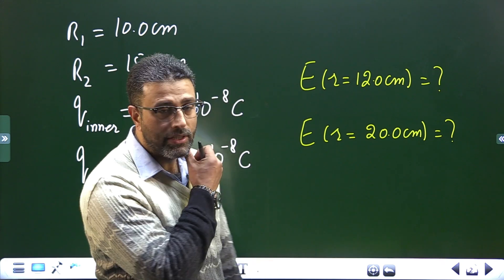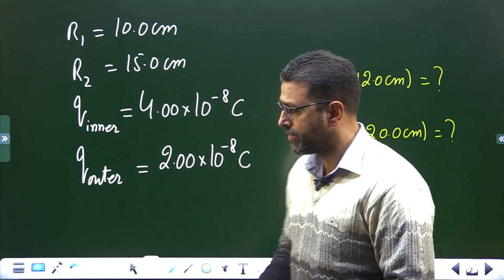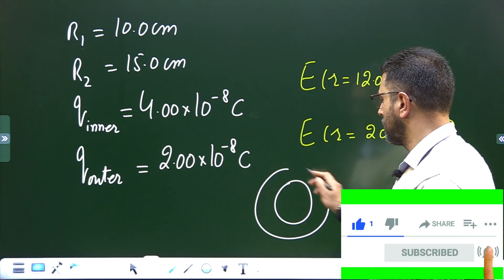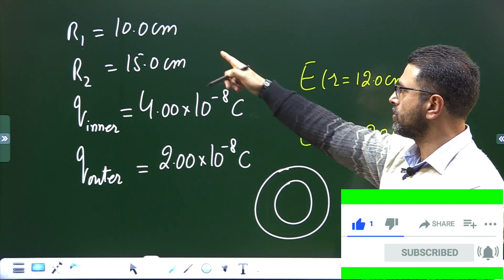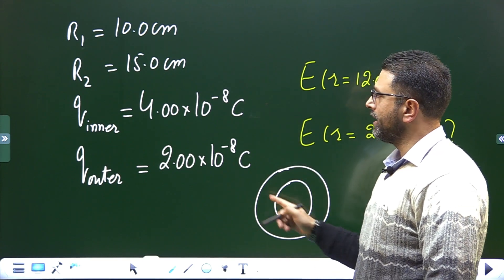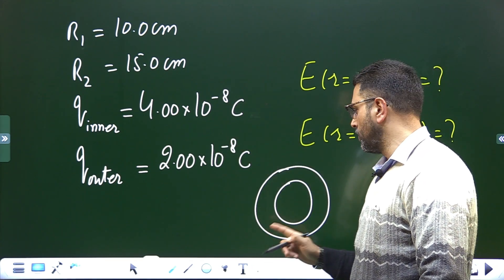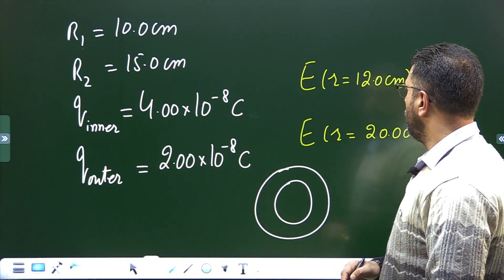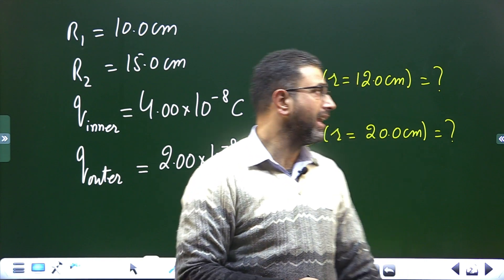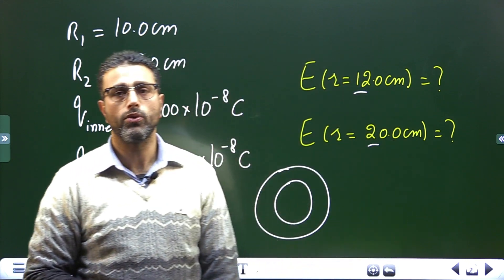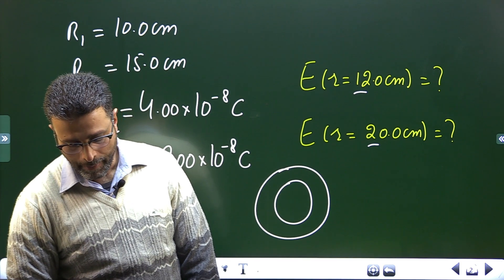We have two concentric charged spheres. The inner one has a radius of 10 centimeters and the outer one has a radius of 15 centimeters. The inner one has a charge of 4×10⁻⁸ coulombs and the outer one has a charge of 2×10⁻⁸ coulombs. We are asked to find the field at 12 centimeters and at 20 centimeters from the center.